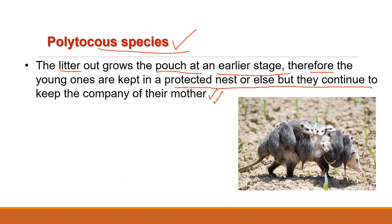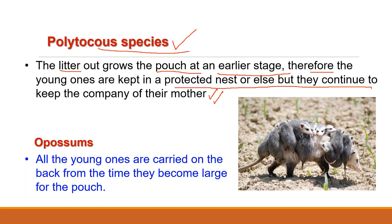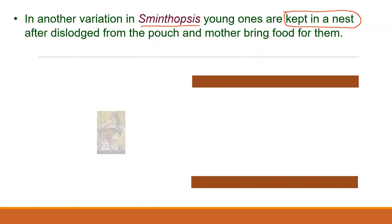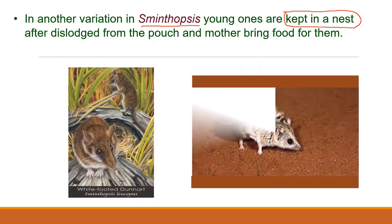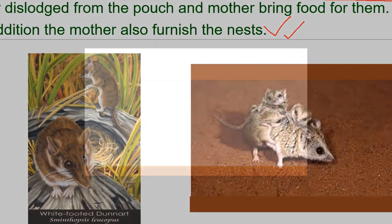In case of opossum, according to Hernam 1952, all young ones are carried on the back from the time they become too large for the pouch. In case of Marmosa, another variation is observed in Sminthopsis, where the young ones, after being dislodged from the pouch, are kept in a nest and the mother brings food for them. In addition, the mother also carries grass and leaves to furnish the nest at intervals.